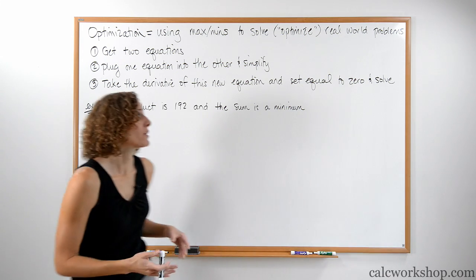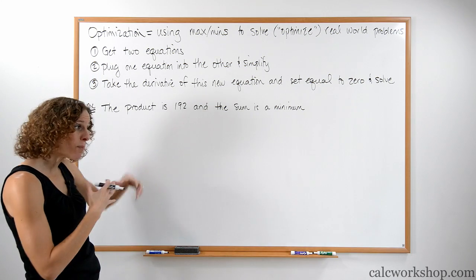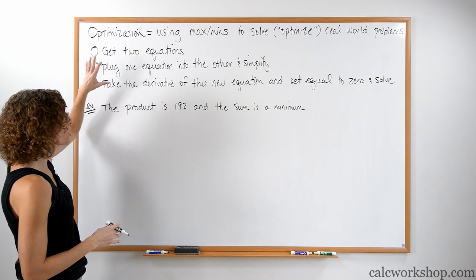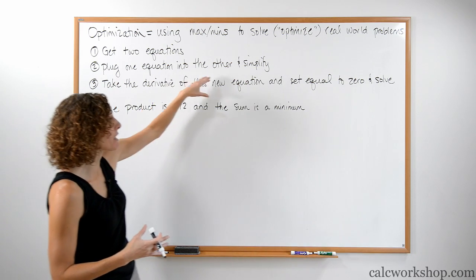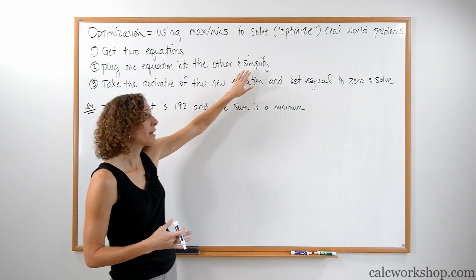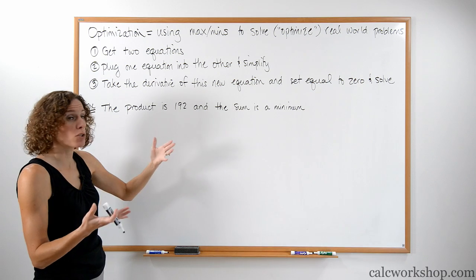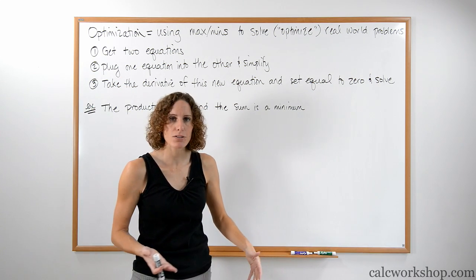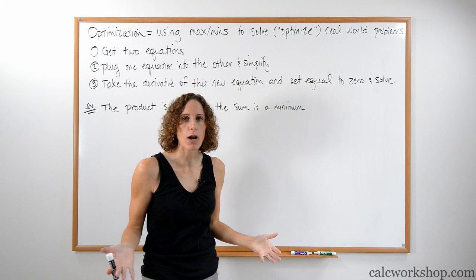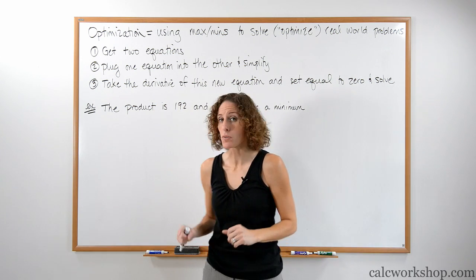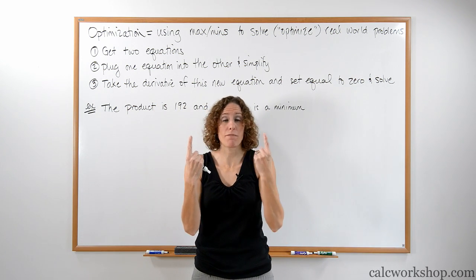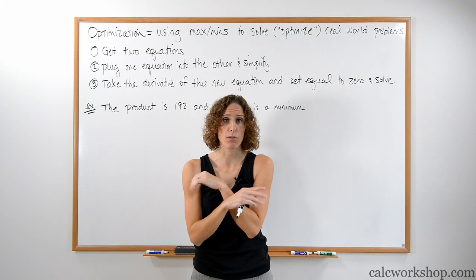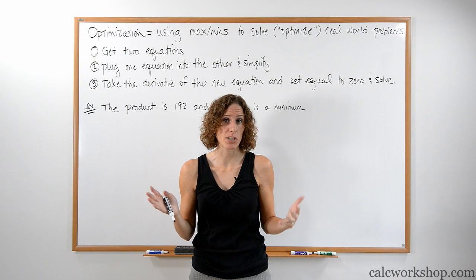Here are the three steps. One: we need to get two equations — somewhere within the problem we've got to find two equations. Step two: we're going to plug one of those equations into the other and simplify it. And then step three: we're going to take the derivative of this new equation we just found in step two, set it equal to zero, and solve. That's it. That's all we ever have to do for optimization.